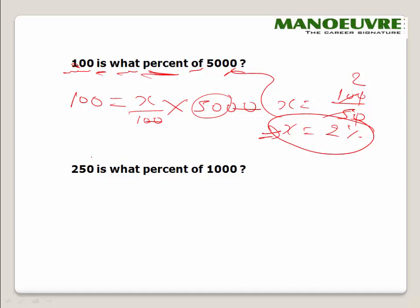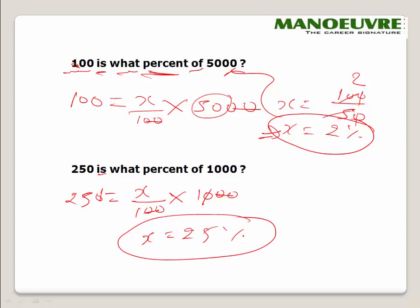One more example: 250 is what percent of 1000? So 250 = x/100 × 1000. The zeros cancel, and x = 25%. So 250 is 25% of 1000. I hope the concept is clear — this is the basic foundation of percentage.